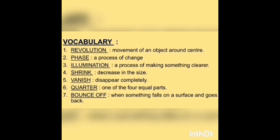Fourth is shrink — decrease in size. For example, students, you are not able to wear your old clothes because the clothes got shrunk. Fifth, vanish — disappear completely. We can say a thing has vanished when we are not able to see it. The next one is quarter — one of the four equal parts. When you cut a cake into four equal parts, one piece of it is called a quarter.